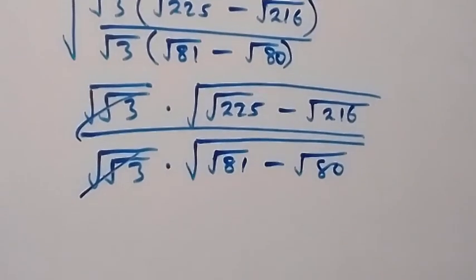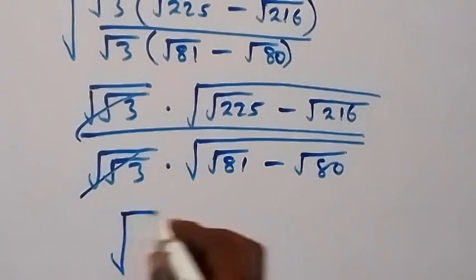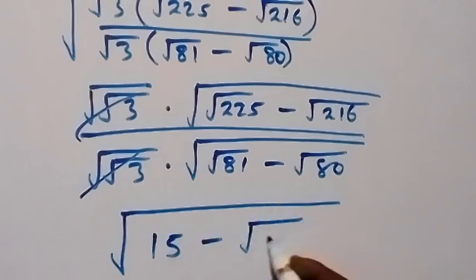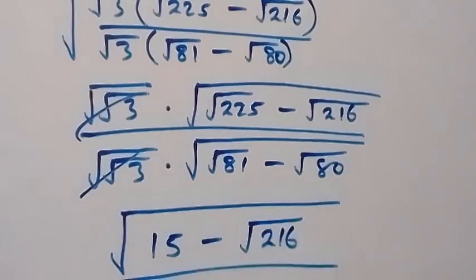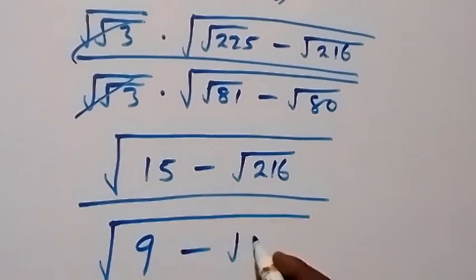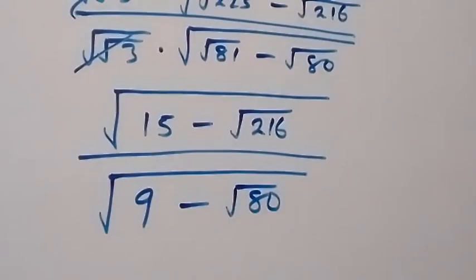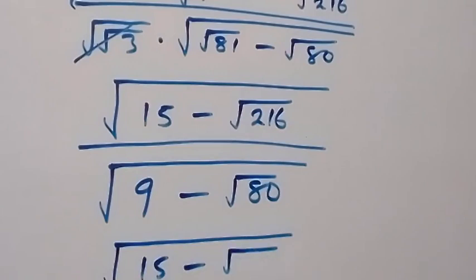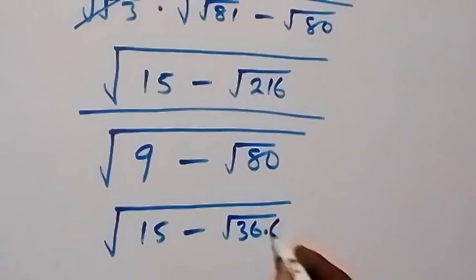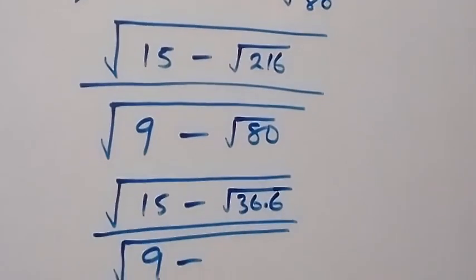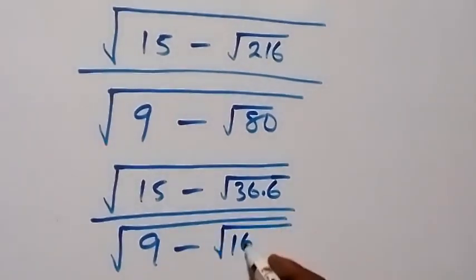What we have left becomes square root of: root 225, that's 15, then minus root 216, then divided by root 81, which gives us 9, then minus root 80. We can write 216 as 36 times 6, so this gives us square root of 15 minus root 36 times 6, then divided by square root of 9 minus root 16 times 5.